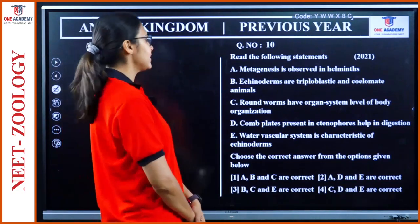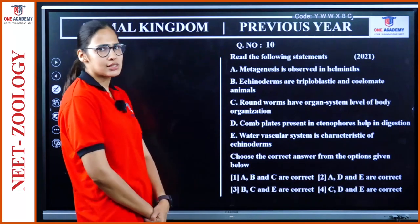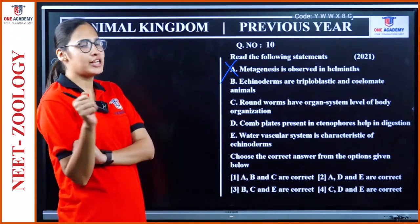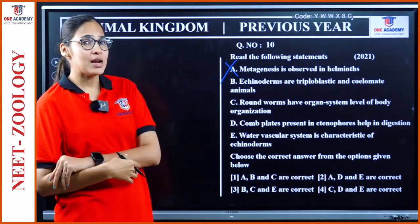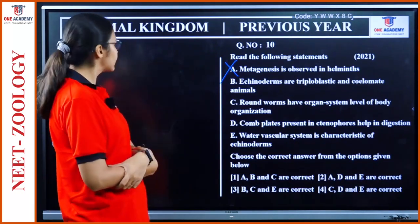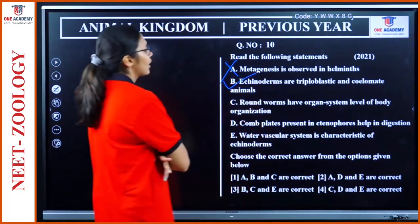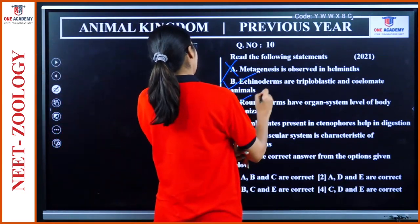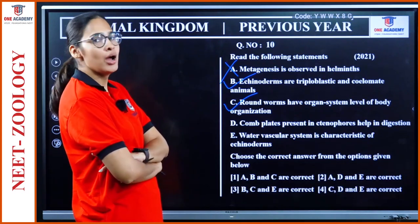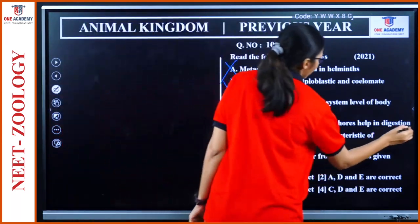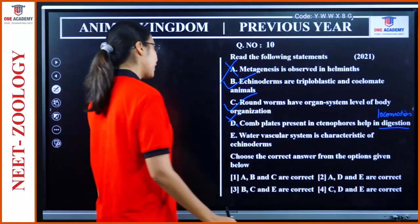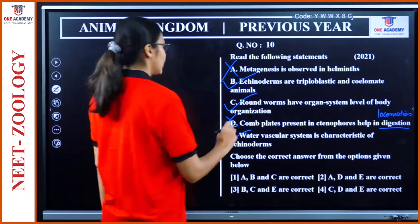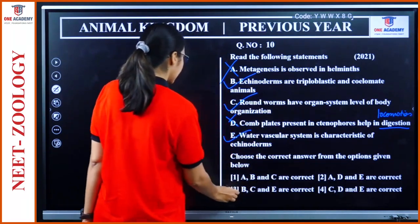Question 10: Evaluate these statements. Metagenesis is observed in helminths — wrong; metagenesis is alternation of generation and is not seen in Platyhelminthes or Aschelminthes. Echinoderms are triploblastic and coelomate — yes, correct. Roundworms have organ system level of body organization — yes, correct. Comb plates seen in Ctenophora help in digestion — wrong, they are for locomotion. Water vascular system is characteristic of echinoderms — yes. So B and C are the correct statements.